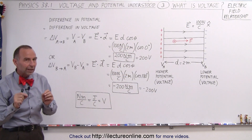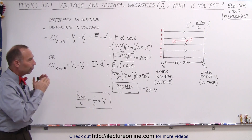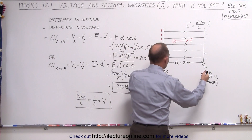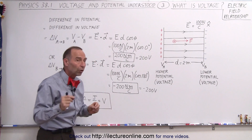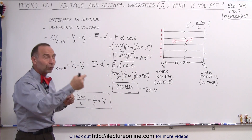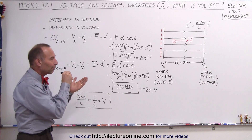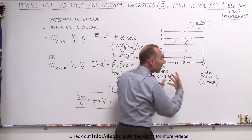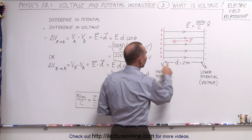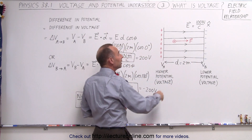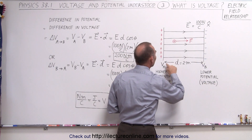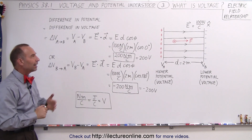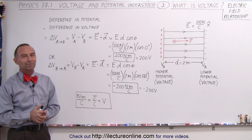So you can see it's very important to realize two things. First, voltage or potential is most meaningful when we talk about the difference in potential between two locations, like the left side and the right side of this electric field. Second, it's important to specify the direction of travel from one location to the other. The difference V_A minus V_B gives positive 200 volts, while V_B minus V_A gives negative 200 volts — meaning V_B is 200 volts lower than V_A. As long as we keep that straight, we'll have a solid understanding of what voltage is. And that's how it's done.